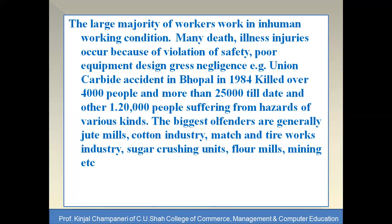Risk and negligence — for example, the Union Carbide gas accident in Bhopal in 1984 killed over 4,000 people and more than 25,000 till date. The biggest offenders are generally huge mills, cottage industries, match and bidi work industries, sugar crushing units, flour mills, mining, etc. The majority of workers' working environments involve illness and injuries, with employees lacking proper safety aspects.